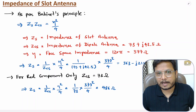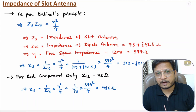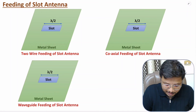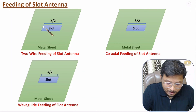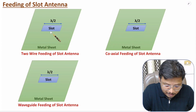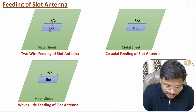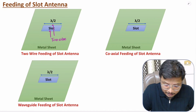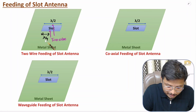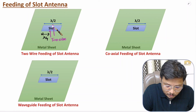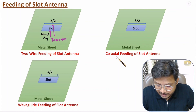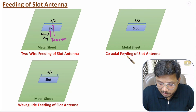Now I'll explain feeding techniques for slot antenna — three different types. The first feeding mechanism is two-wire feeding. Here we have the slot, and to apply two-wire feeding, we take the middle of the two edges and connect two wires. The spacing from each edge is lambda by 4, which is half of lambda by 2, so we apply the two wires exactly at the middle of the two edges.